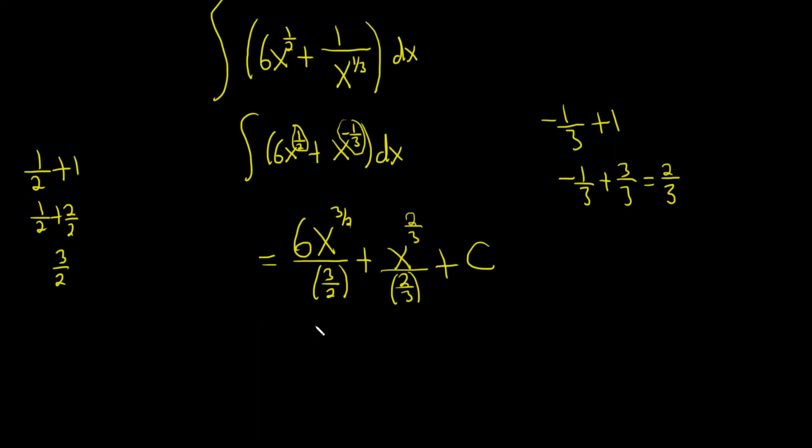Whenever you divide by 3/2, you really multiply by the reciprocal of 3/2. So the reciprocal of 3/2 is 2/3. So this is 2/3 times 6x to the 3/2.